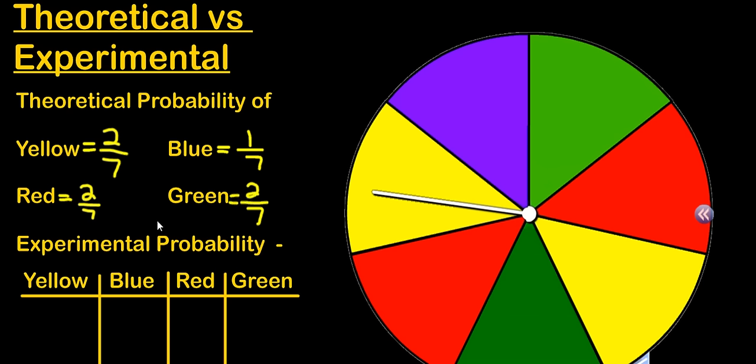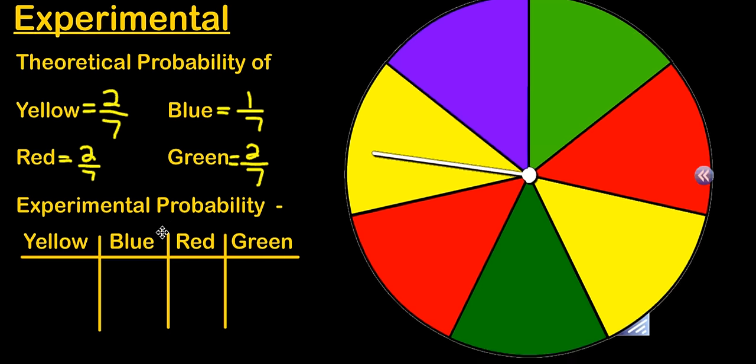Now, when we do experimental probability, we actually perform the experiment and see what happens. So here we go. The first time it landed on red. So I'm going to go ahead and make a mark underneath red. And we're going to spin again. Now it is blue. Once again, I'll make a mark under blue, and we'll spin again.